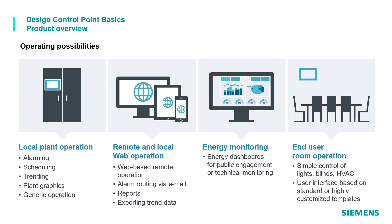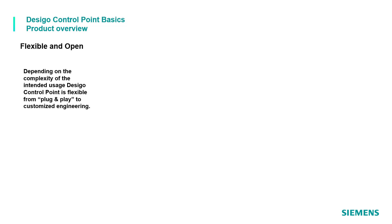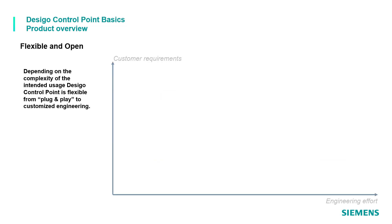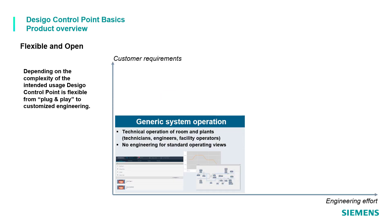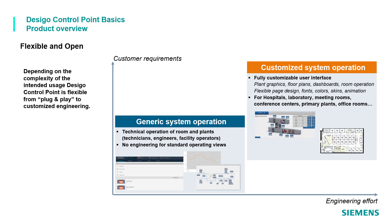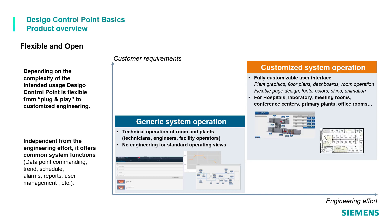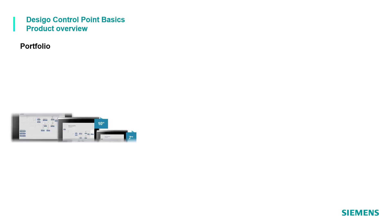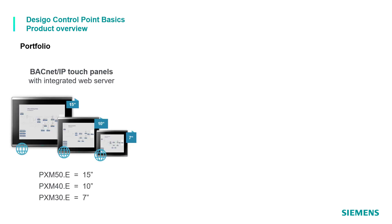One of the strength points of DCGO Control Point is its flexibility and openness, ranging from plug and play to customized engineering. Independent from the engineering effort, it offers common system functions. The portfolio of DCGO Control Point offers a set of three BACnet IP touch panels.